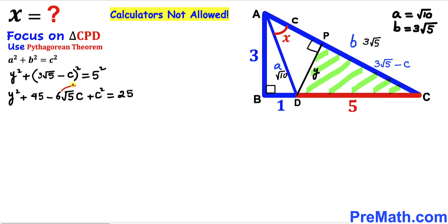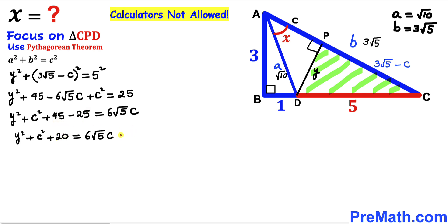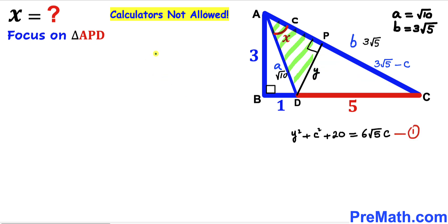Rearranging: y² + c² + 45 - 25 = 6√5·c, which simplifies to y² + c² + 20 = 6√5·c. We label this as Equation 1.